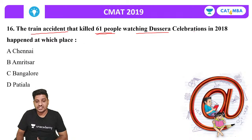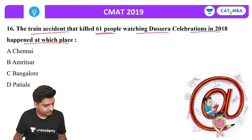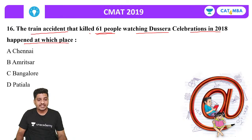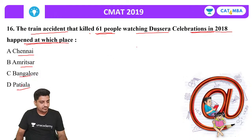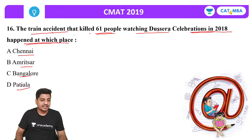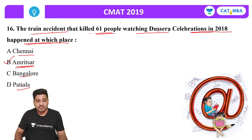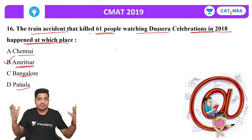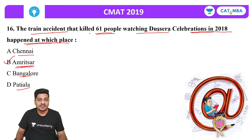Next question: The train accident that killed 61 people watching Dussehra celebrations in 2018 happened at which place? Options are Chennai, Amritsar, Bangalore and Patiala. People were watching Ravana's effigy burning and unfortunately the train ran over them. The correct answer is Amritsar.